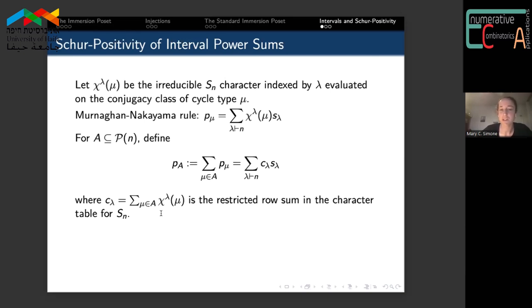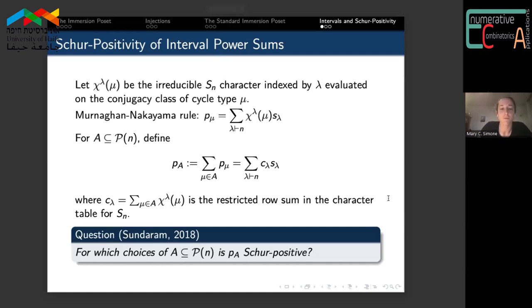Why the setup is maybe interesting is we're looking at a multiplicity-free sum of power sums. If we take all power sum symmetric functions coming from all integer partitions of N, we obtain the Frobenius image of the SN conjugation action on itself. So there's this representation theory of the symmetric group that shows up when we consider these sums of power sums. Sundaram asked in 2018 which choices of subsets of partitions give Schur positivity for these sums of power sums.